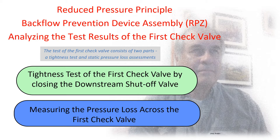The test of the first check valve consists of two parts: a tightness test and a static pressure loss assessment. The tightness test is conducted by closing the downstream shutoff valve. The static pressure loss is conducted by measuring the differential pressure across the first check valve.